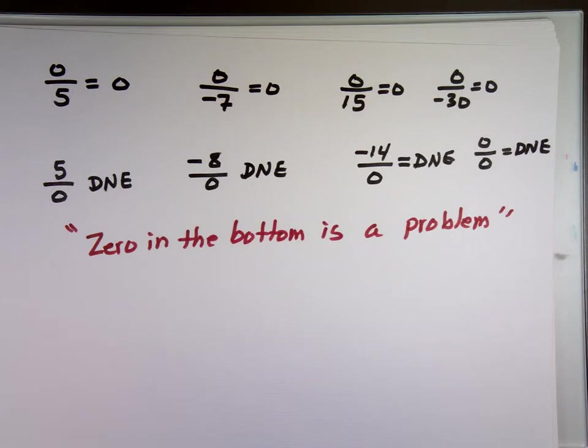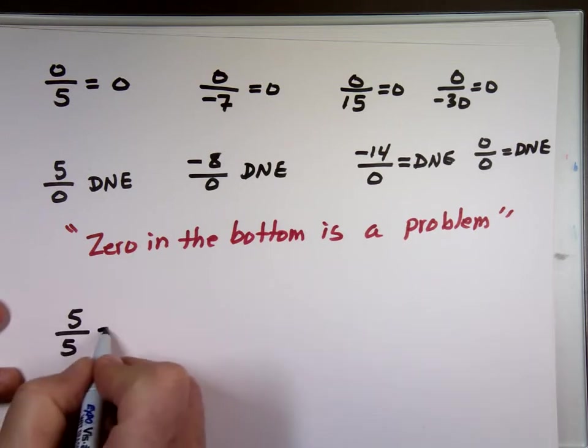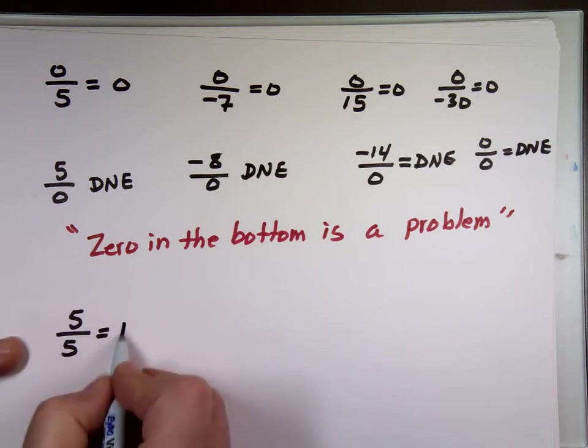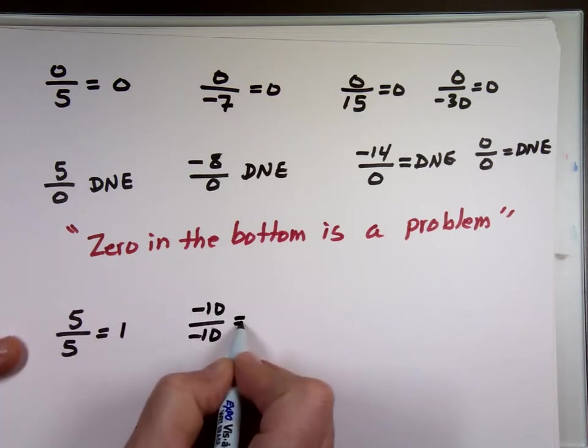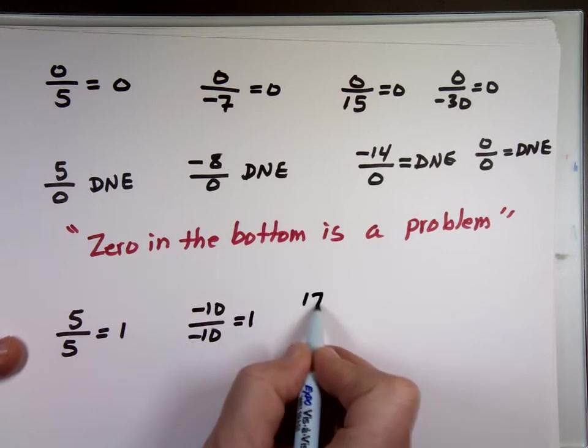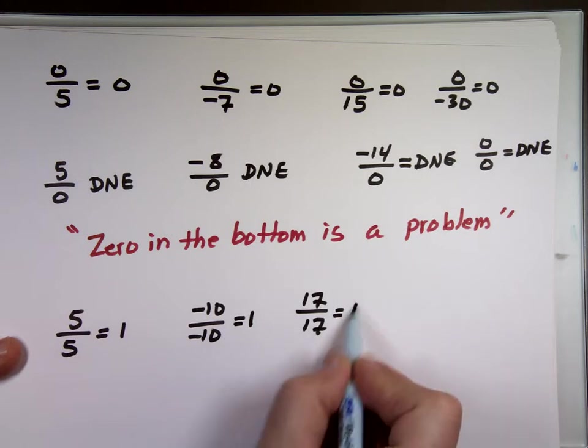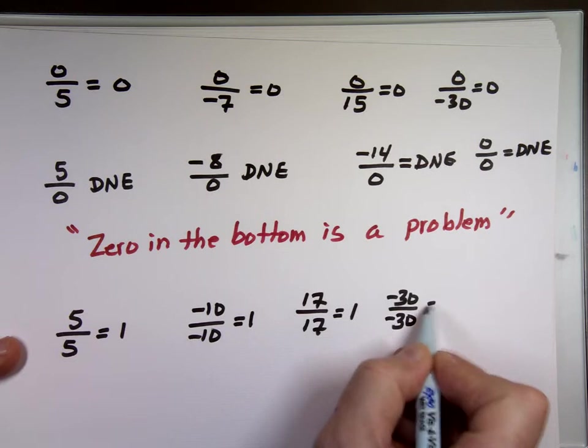The other thing we should know, if you take a number and divide it by itself, except the zero here, if you take a number and divide it by itself, what's the answer? One. What's negative 10 over negative 10? One. What's 17 over 17? One. What's negative 30 over negative 30? One.